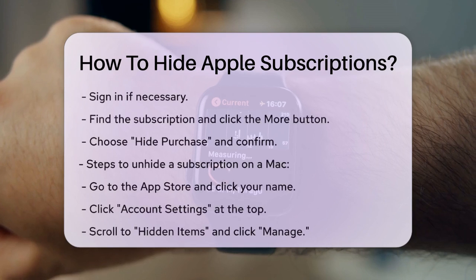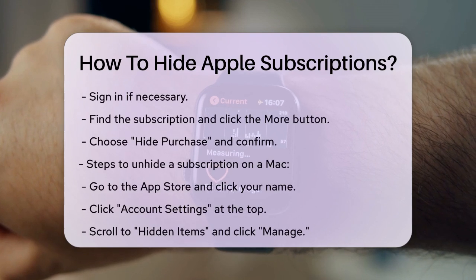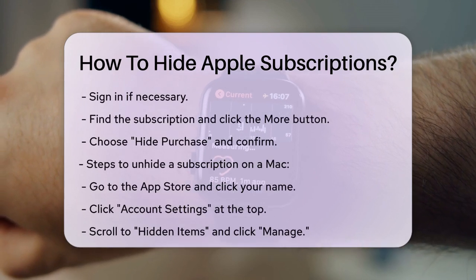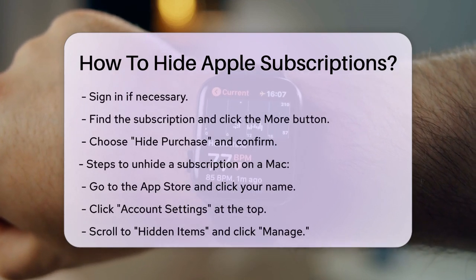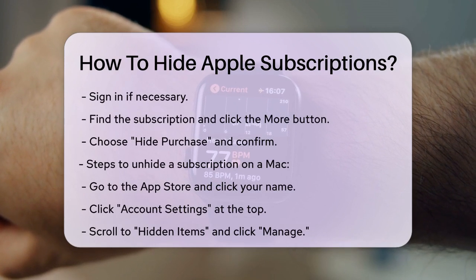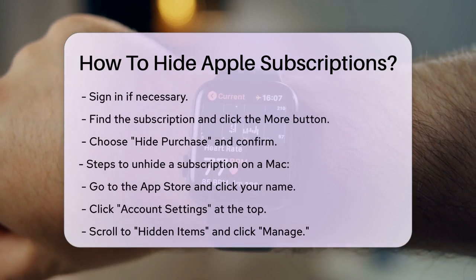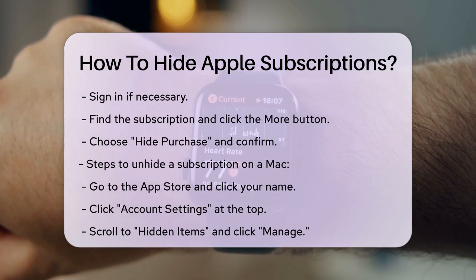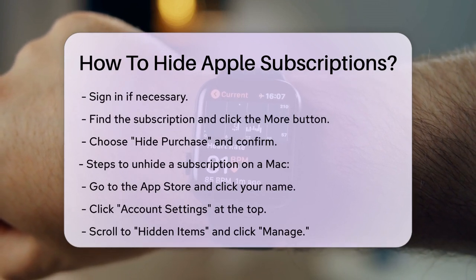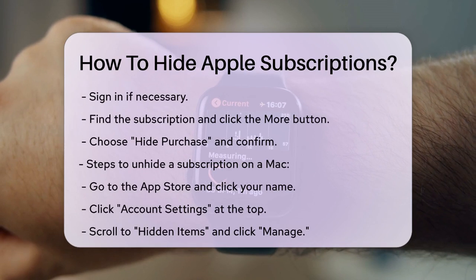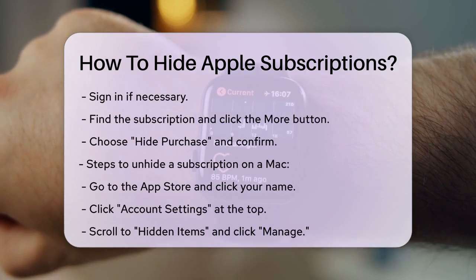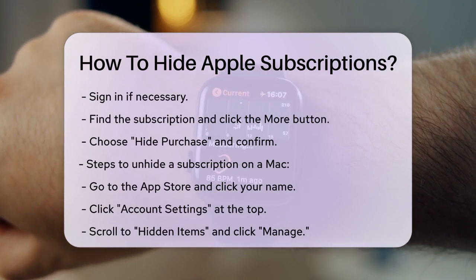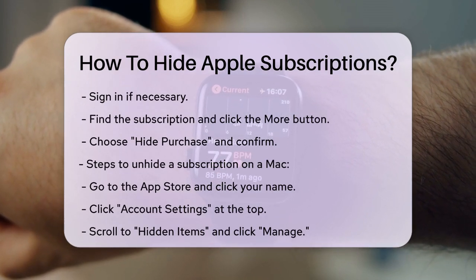If you're using a Mac, the process is a bit different. Open the App Store, click your name at the bottom of the sidebar, and sign in if you're not already. Your purchased apps and subscriptions will appear. Hold your pointer over the subscription you want to hide, click the More button, and choose Hide Purchase.